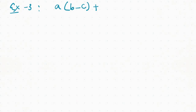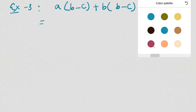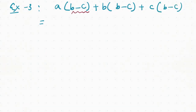I have binomial b whole into b minus c, plus c whole into b minus c. So how do I do it? Which common factor is that? The common factor is b minus c — this also b minus c, this b minus c, and this is b minus c. So I have to write b minus c.